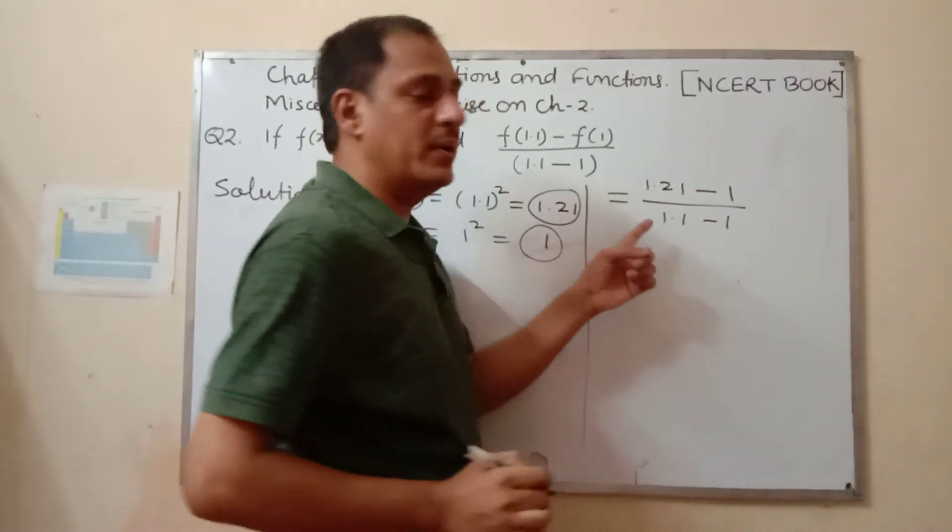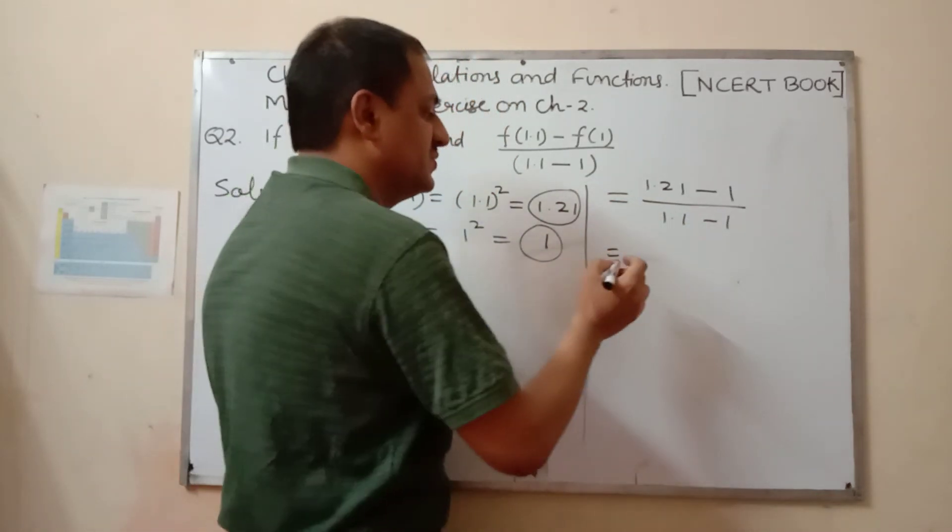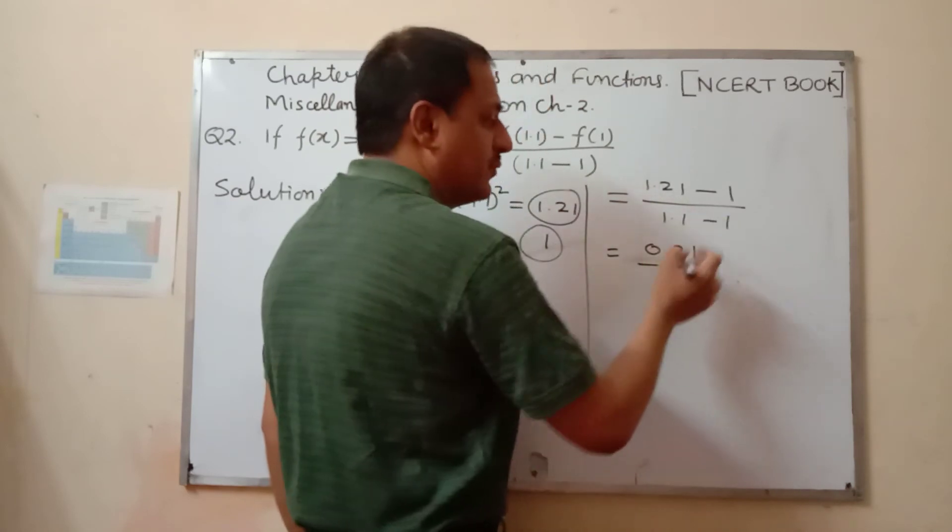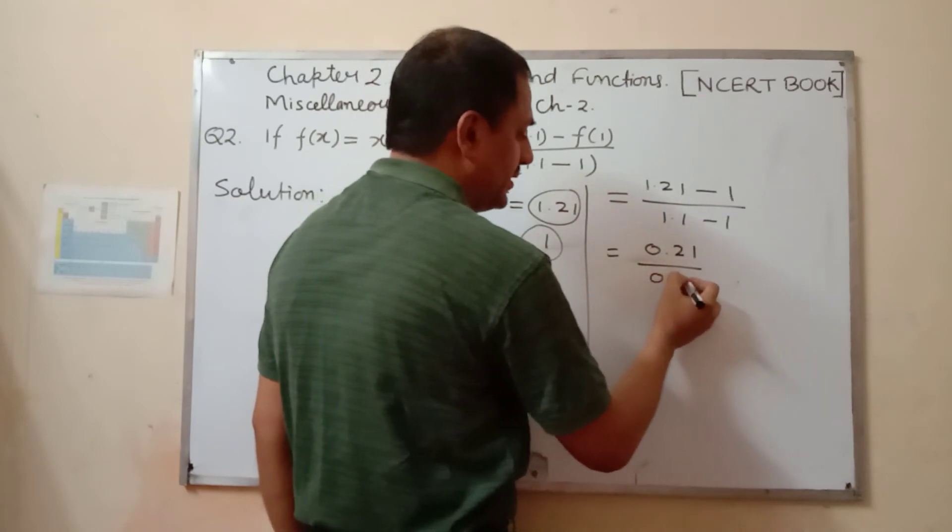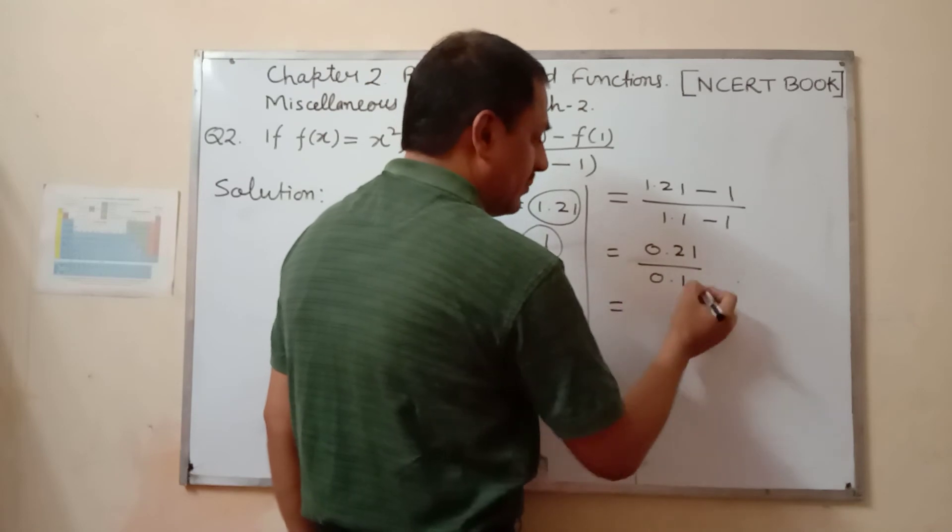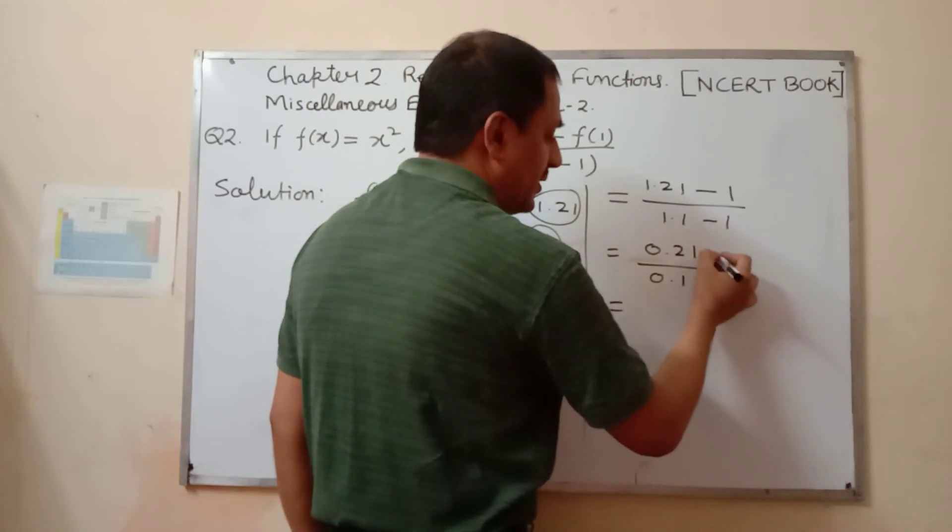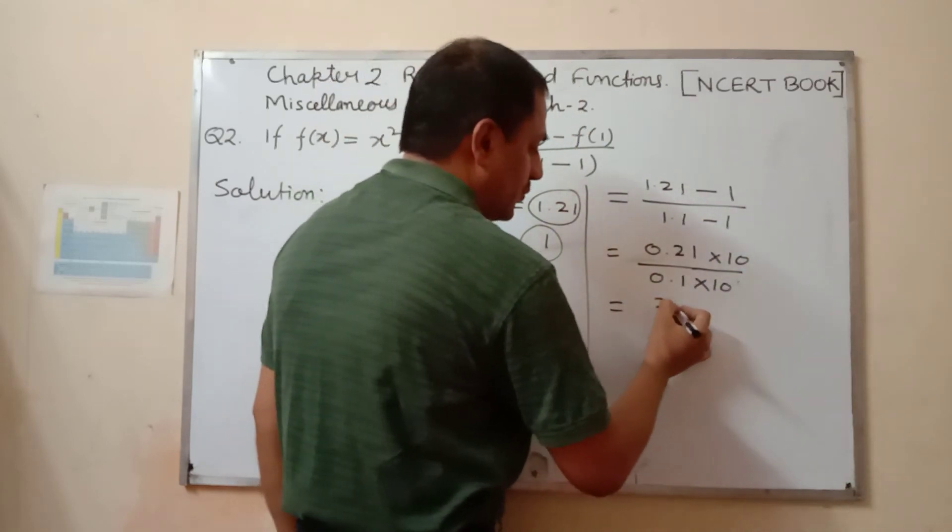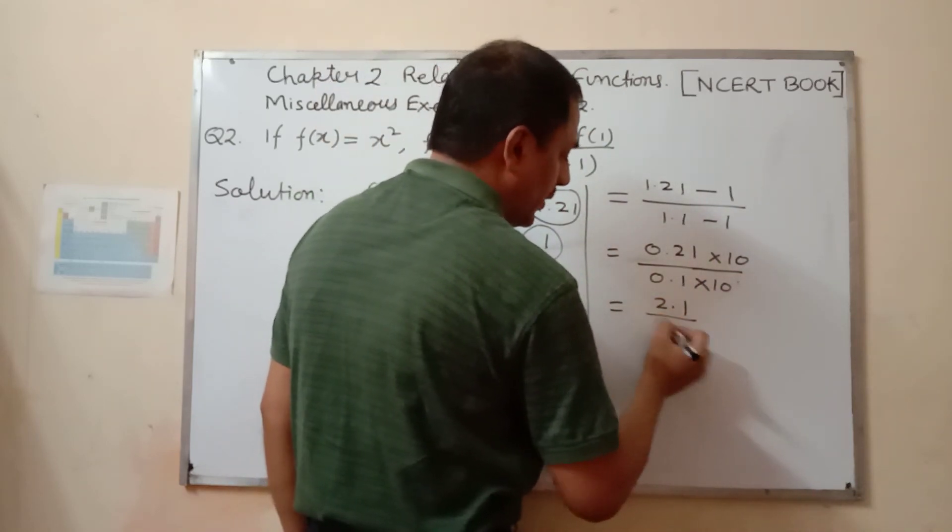1.21 minus 1 equals 0.21 upon 1.1 minus 1 equals 0.1. So, multiply by 10 in the denominator as well as in the numerator: 2.1 upon 1.